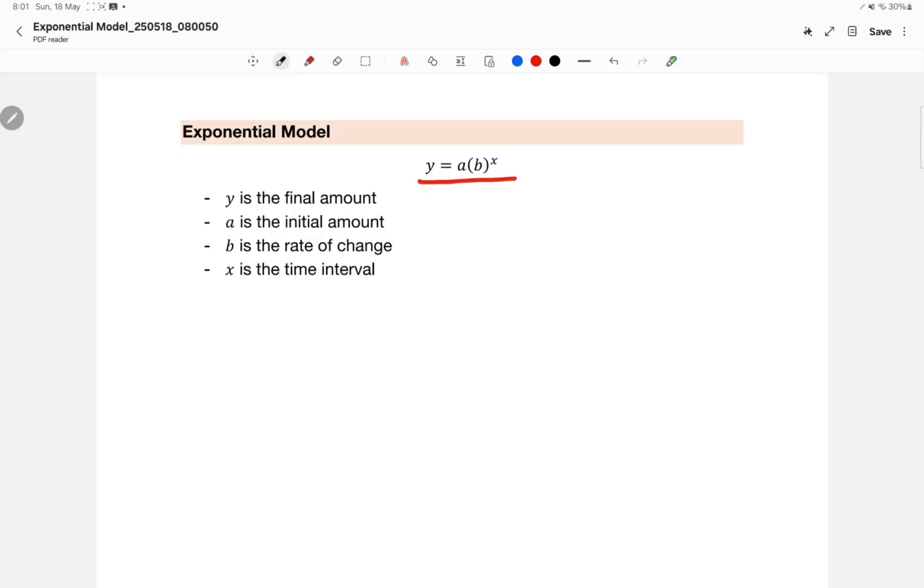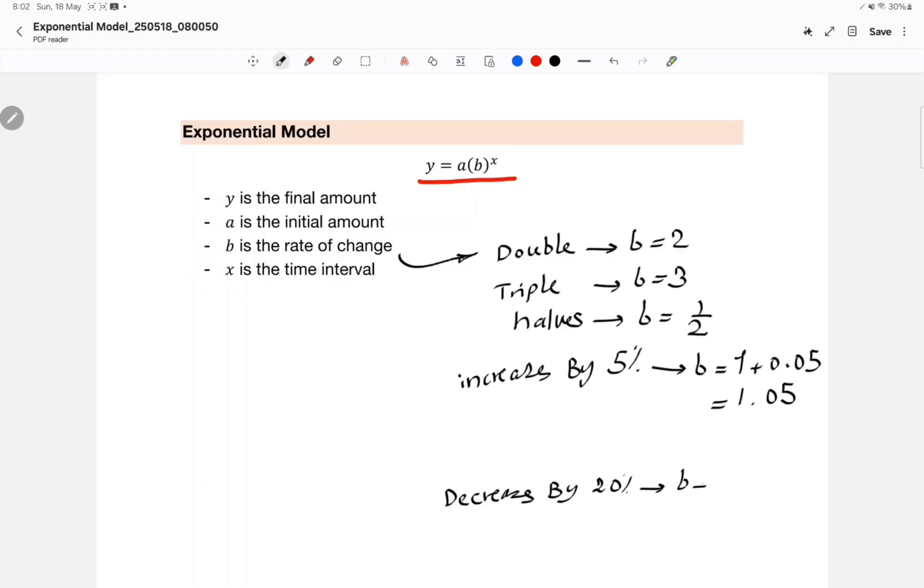So let's focus on b. How do we work with b? If the question says the population doubles, then b equals 2. If the population gets tripled, b equals 3. If the population gets halved, b equals 1/2. If the population is increasing by a certain percentage, say by 5%, then b equals 1 plus 0.05, which is 1.05. If the population decreases by, say, 20%, then b equals 1 minus 0.20, which is 0.8.